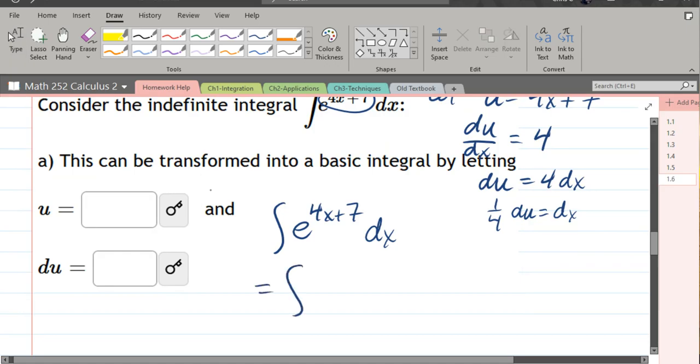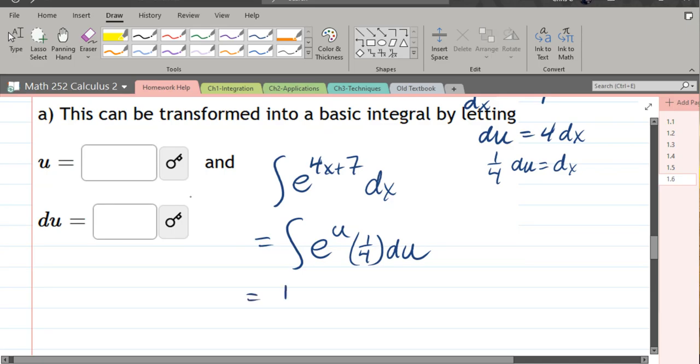And now we're ready to sub e to the u. So that takes care of that 4x plus 7. Now dx turns into 1 fourth du. We're basically done here except I'll just move the 4th out.